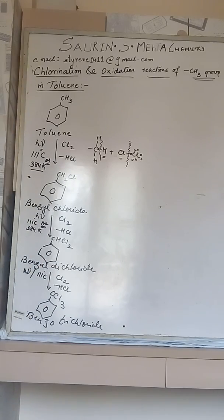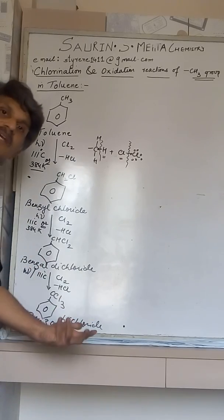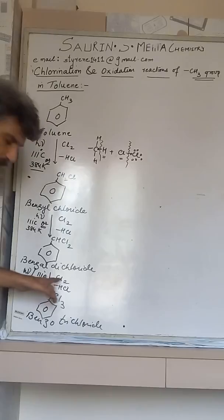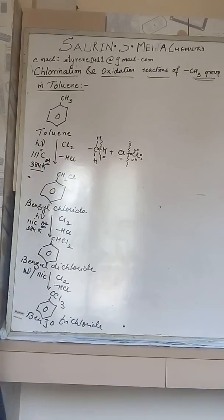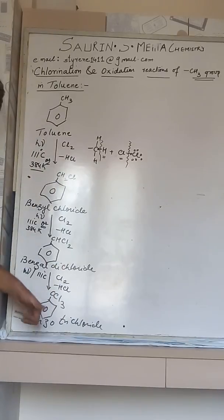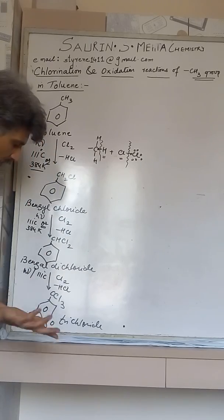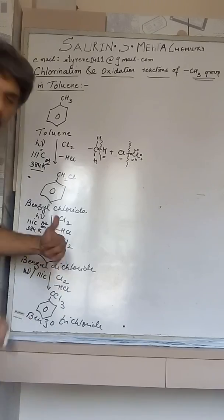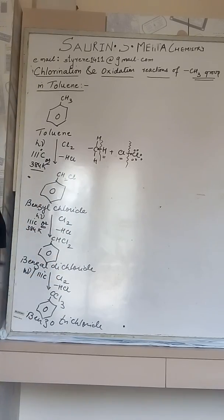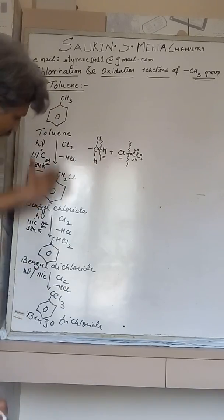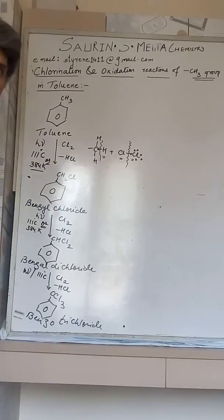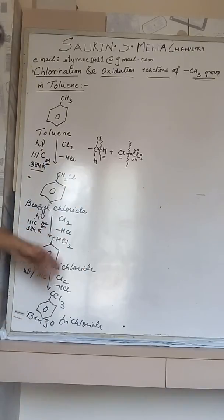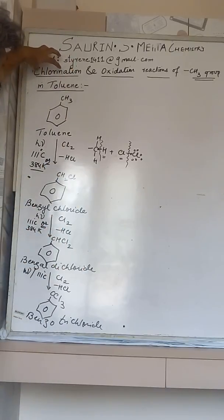Further chlorination under the same conditions is not possible because the carbon had only three hydrogen atoms, and all three have been substituted. No hydrogen remains, so no further chlorination can take place under these conditions. This completes the chlorination reaction of the methyl group in toluene.